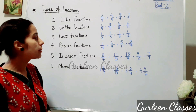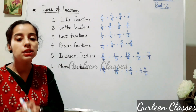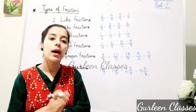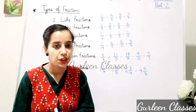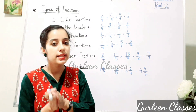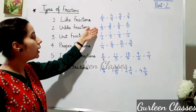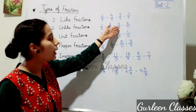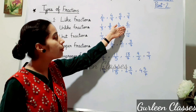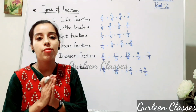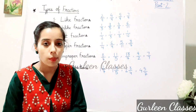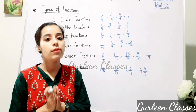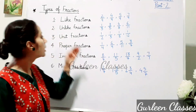Next, unlike fractions. Fractions with different denominators are called unlike fractions. For example: 1/3, 3/5, 4/8, and 6/11. Here we have different denominators and they are called unlike fractions.